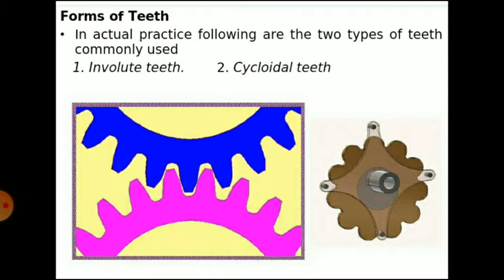Another type is bevel gears. In these gears, the teeth are cut on the conical surface, and they are used for connecting driving and driven shafts whose axes intersect and are generally at right angles. Then rack and pinion: rack gears are straight spur gears with infinite radius, and a pinion is a small spur gear. They are used in combination to convert rotary motion into reciprocating motion or vice versa. The two forms of teeth are involute and cycloidal.